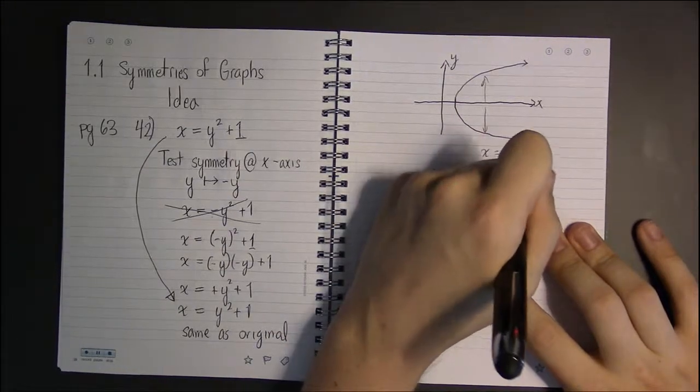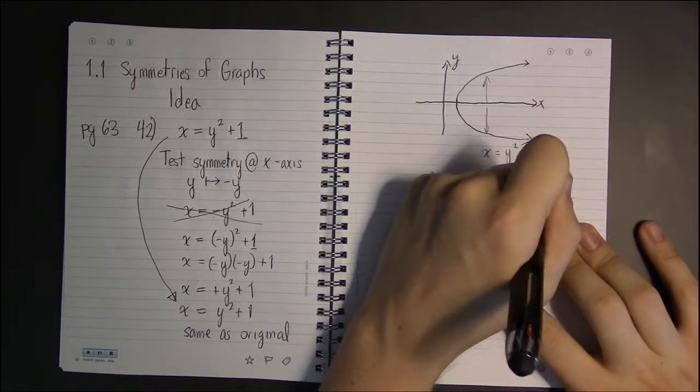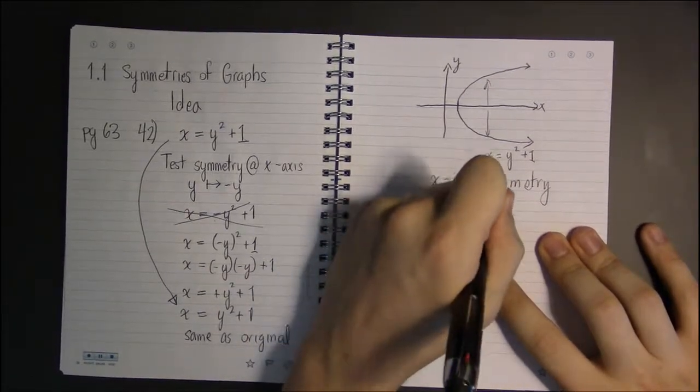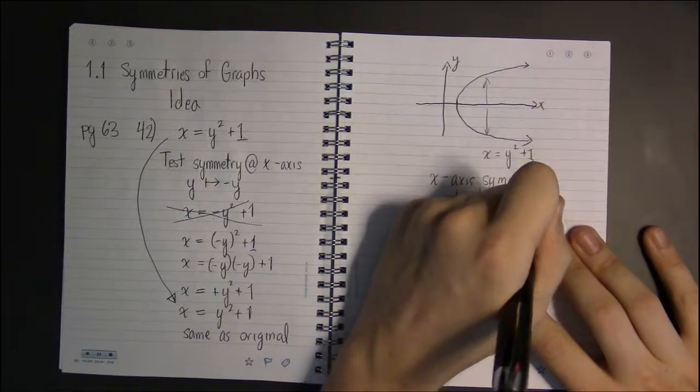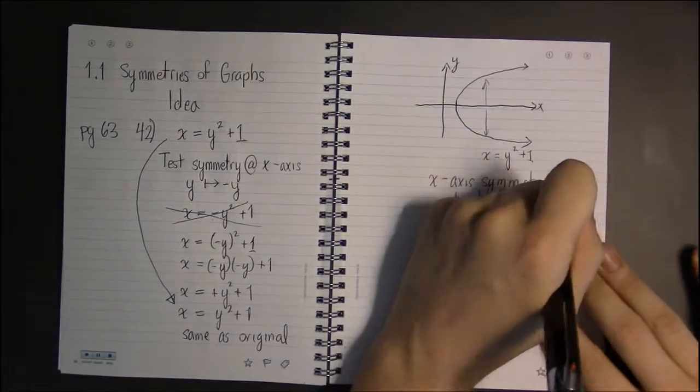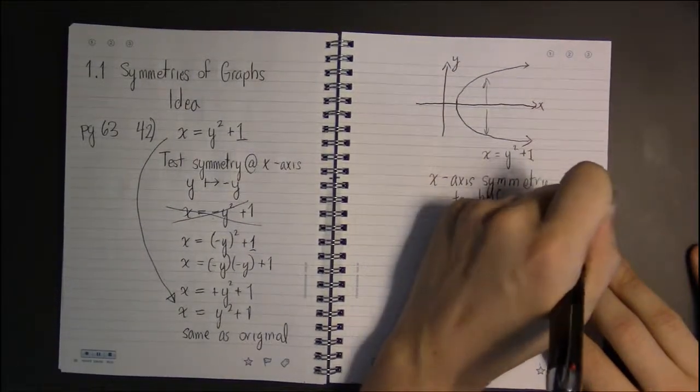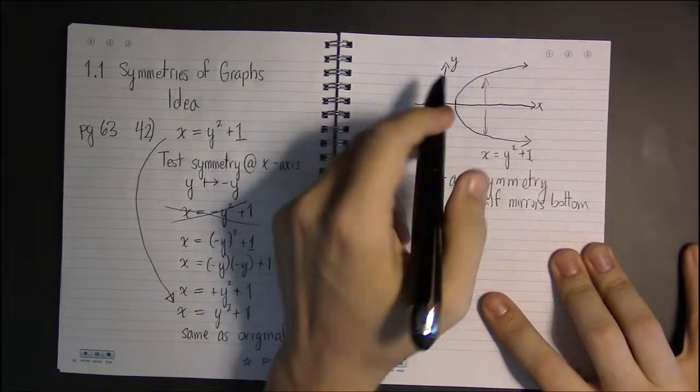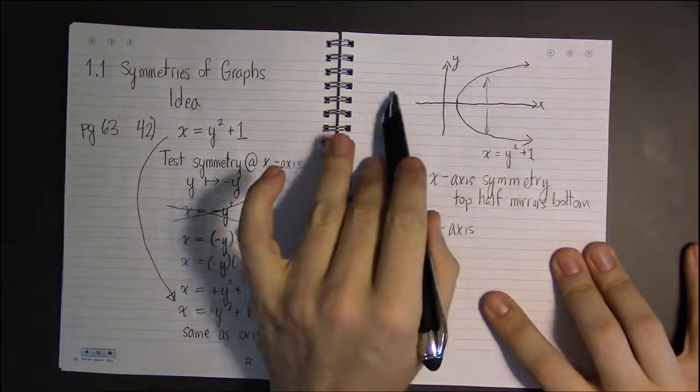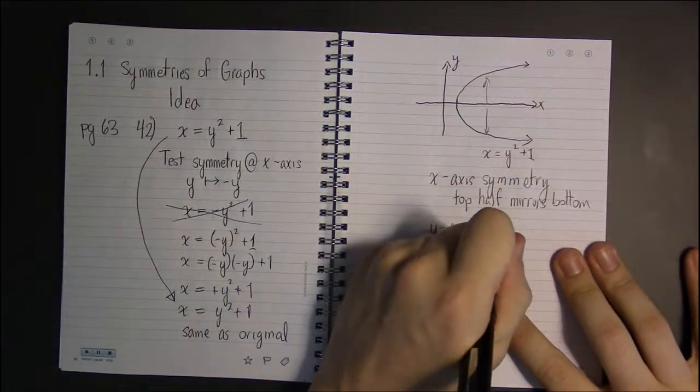Y-axis symmetry is similar—the top half mirrors the bottom half. Y-axis symmetry means that the right half is the mirror image of the left half.